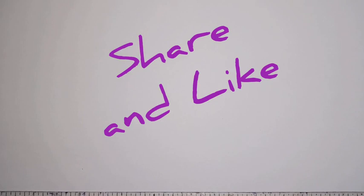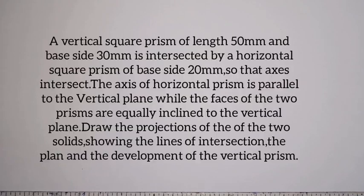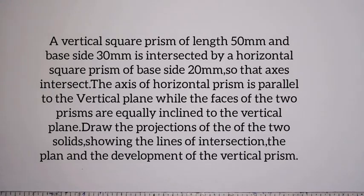The question we have today: a vertical square prism of length 50 millimeters and base side of 30 millimeters is intersected by a horizontal square prism of side 20 millimeters, so that the axes intersect. The axis of the horizontal prism is parallel to the VP or the vertical plane, while the faces of the two prisms are equally inclined to the vertical plane. Draw the projections of the two solids showing the lines of intersection, the plan, and the development of the vertical prism.